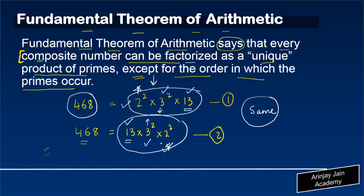But the output, which is the combination of primes that we have, is unique for every composite number. You cannot have any other composite number having the same factorization as 468, or for that matter, for any other number. And this is what Fundamental Theorem of Arithmetic is all about.